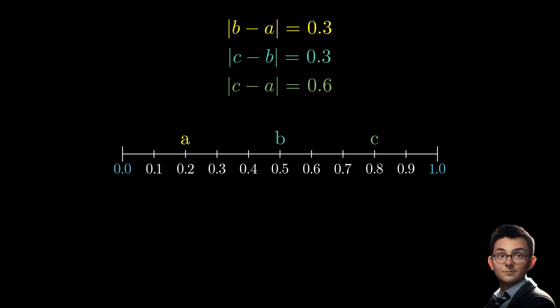We can observe that the difference between b and a is less than 0.5. Same goes for the difference between c and b. Let's take a second example by placing a on zero, and we observe that the result is similar.